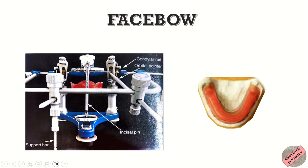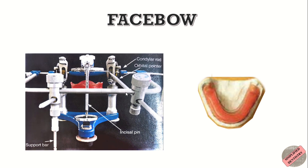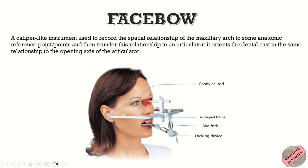This is the reason why the face bow is used. A face bow is defined as a caliper-like instrument used to record the spatial relationship of the maxillary arch to some anatomic reference points and then transfer this relationship to an articulator. It orients the dental cast in the same relationship to the opening axis of the articulator.